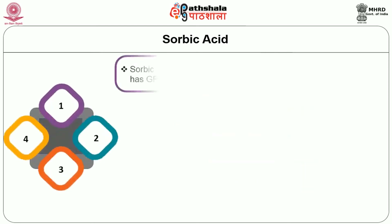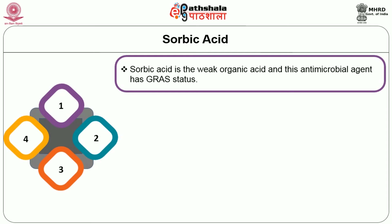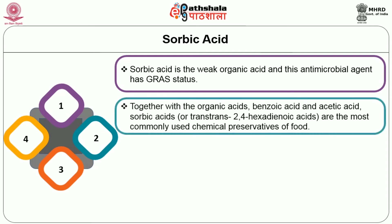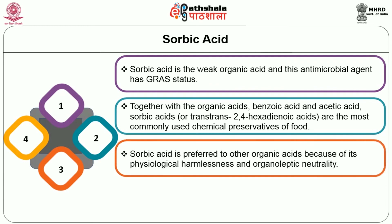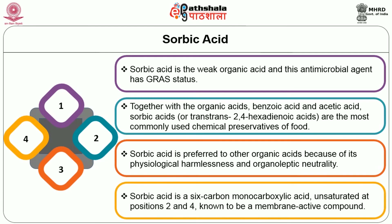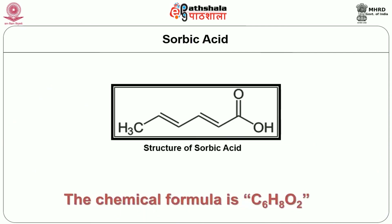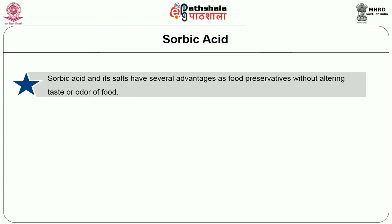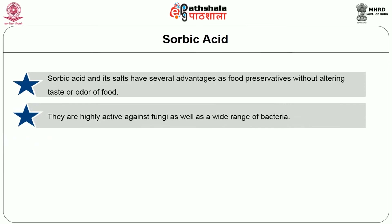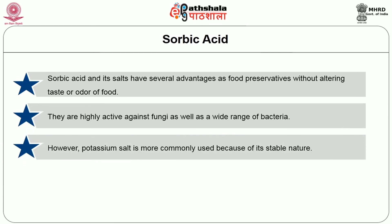Now let's see about sorbic acid. It is a weak organic acid and this antimicrobial agent again has GRAS status. Together with benzoic acid and acetic acid, sorbic acid is among the most commonly used chemical preservatives of food. Sorbic acid is preferred to other organic acids because of its physiological harmlessness and organoleptic neutrality. Sorbic acid is a 6-carbon monocarboxylic acid unsaturated at positions 2 and 4, known to be a membrane active compound. The chemical formula is C6H8O2. Sorbic acid and its salts have several advantages as food preservatives without altering the taste or odor of food. They are highly active against fungi as well as a wide range of bacteria. The potassium salt is more commonly used because of its stable nature.